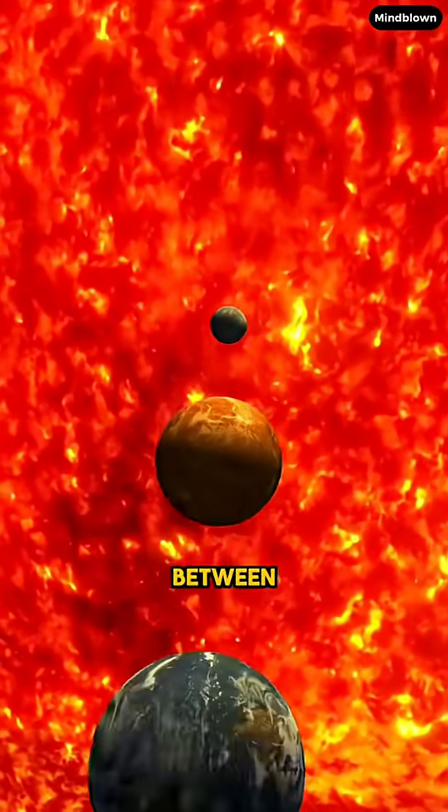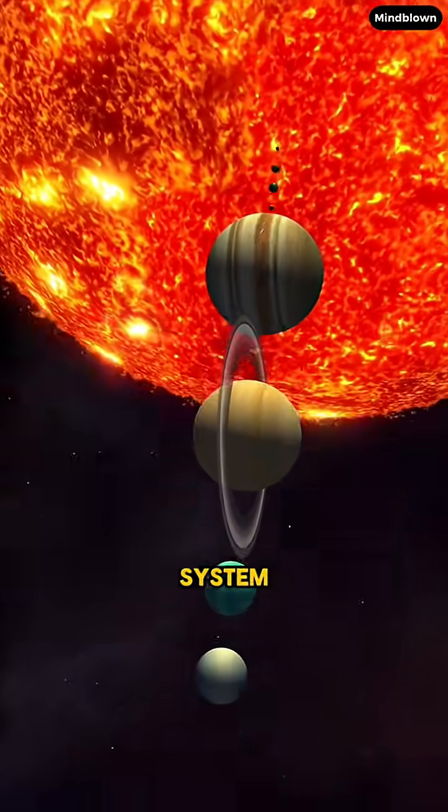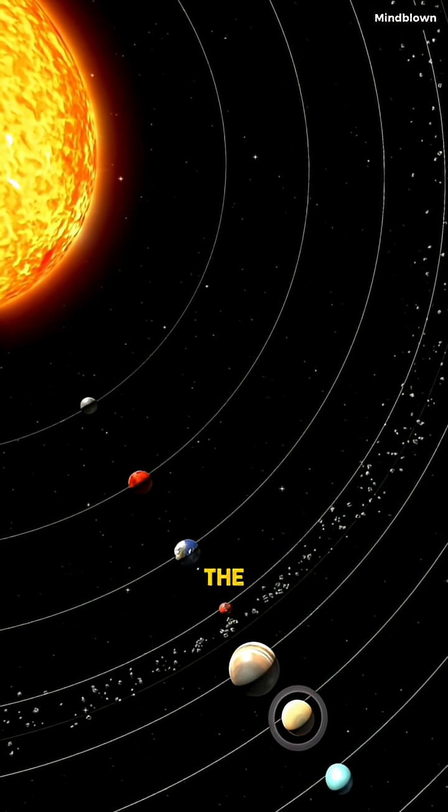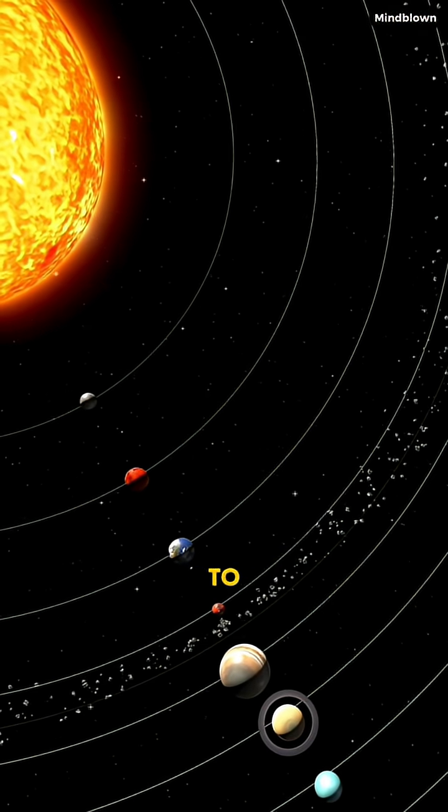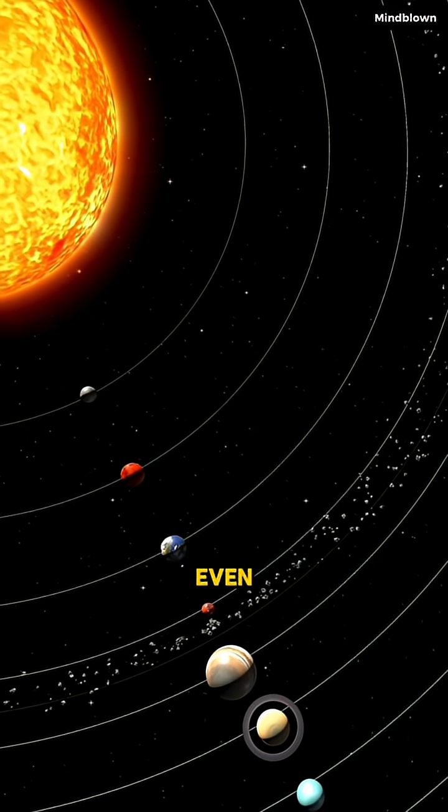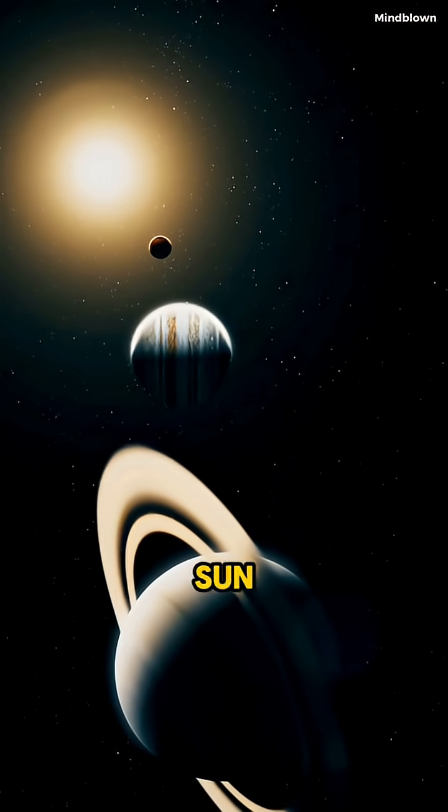Just look at the size differences between the planets and moons in our solar system. You don't really notice how massive the gas giants are until you compare them to the smaller planets, but even those giants are tiny compared to the sun.